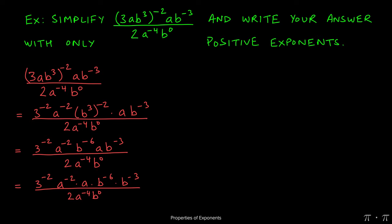At this stage, we can use the product rule for the a's and the b's in the numerator. Since the bases are same and we're multiplying, we can add the exponents. Negative 2 plus 1 gives us a negative 1 in the numerator for power of a. And negative 6 minus 3 gives us a power of negative 9. The denominator still stays the same.